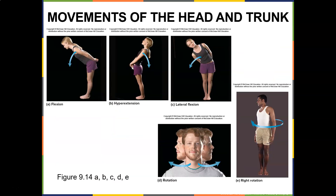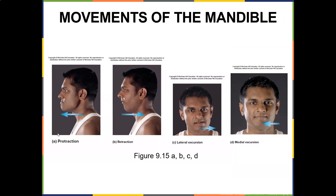Movements of the spine include flexion, hyperextension, and lateral flexion, as well as right rotation of the cervical spine and rotation of the lumbar spine. Jaw movements include protraction and retraction of the jaw, and lateral and medial excursion.